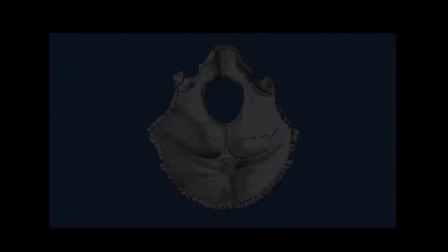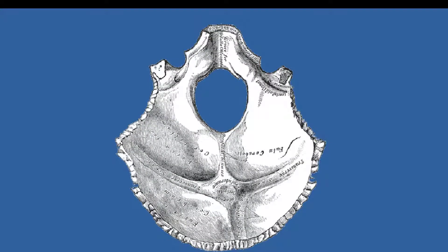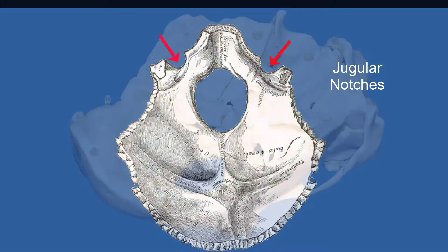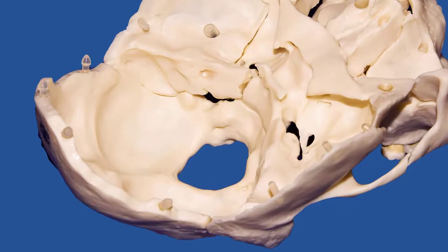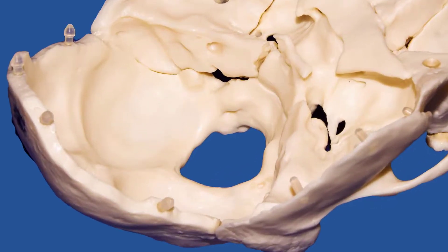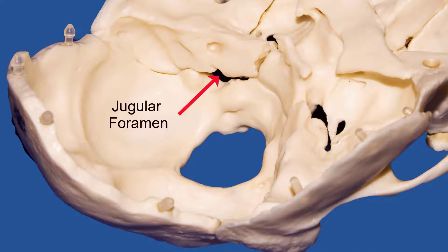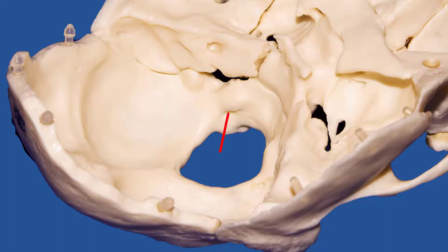Here is a look at the occipital bone isolated in this figure. You can see very clearly why it's called the jugular notch in this view. Here is another view of the jugular foramen from an oblique view using the plastic skull. This also gives you another view of the hypoglossal canal.